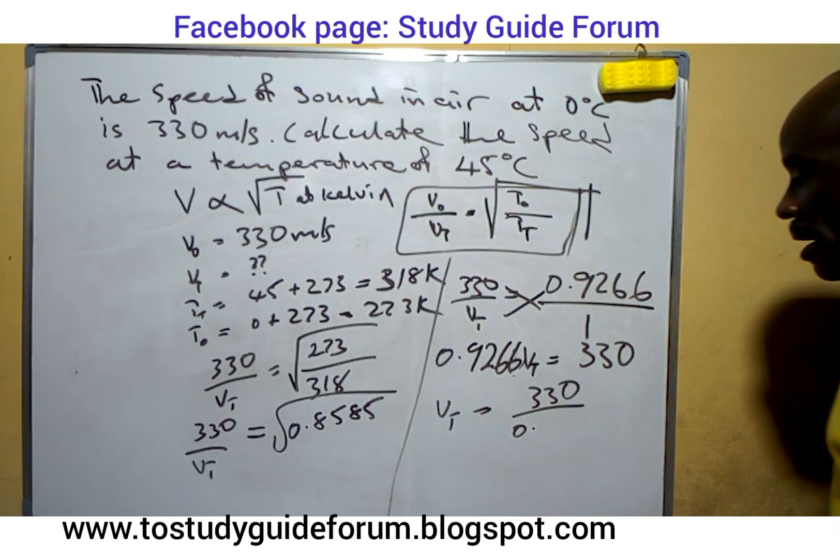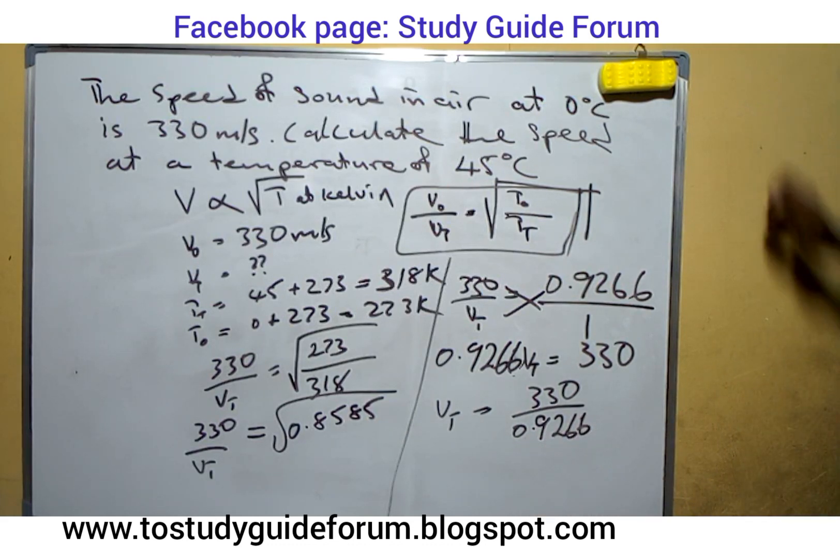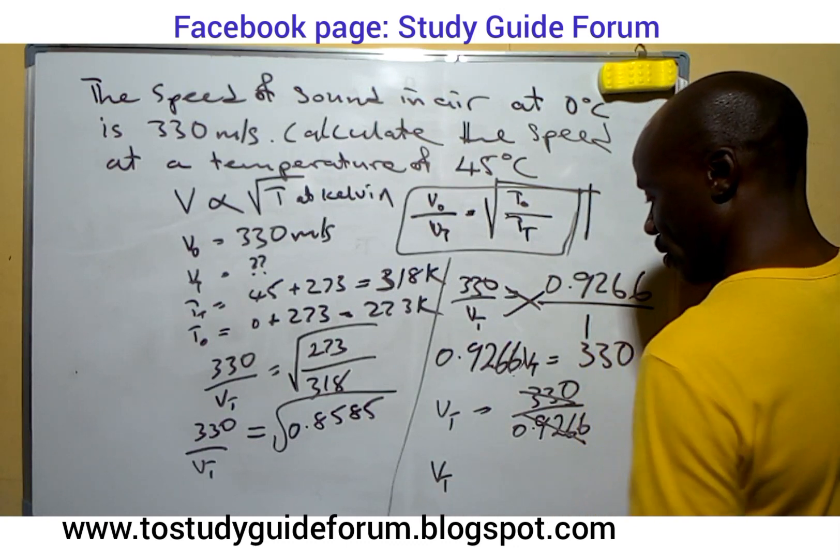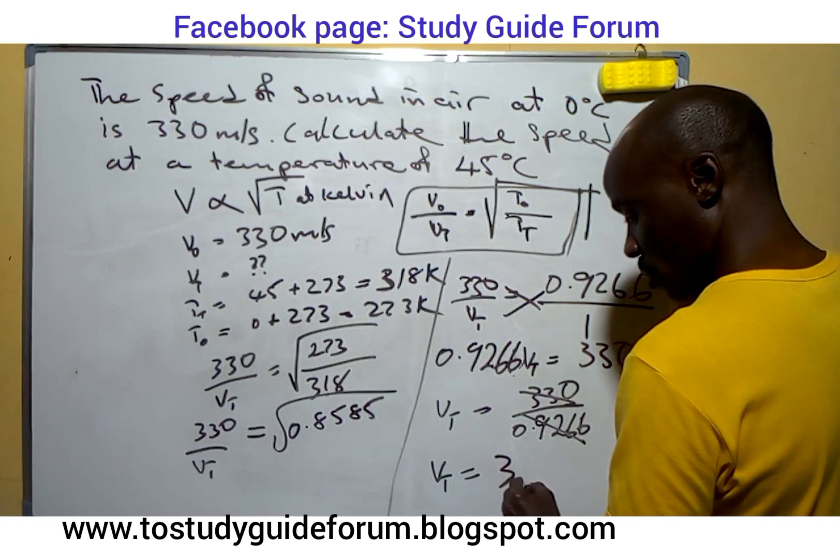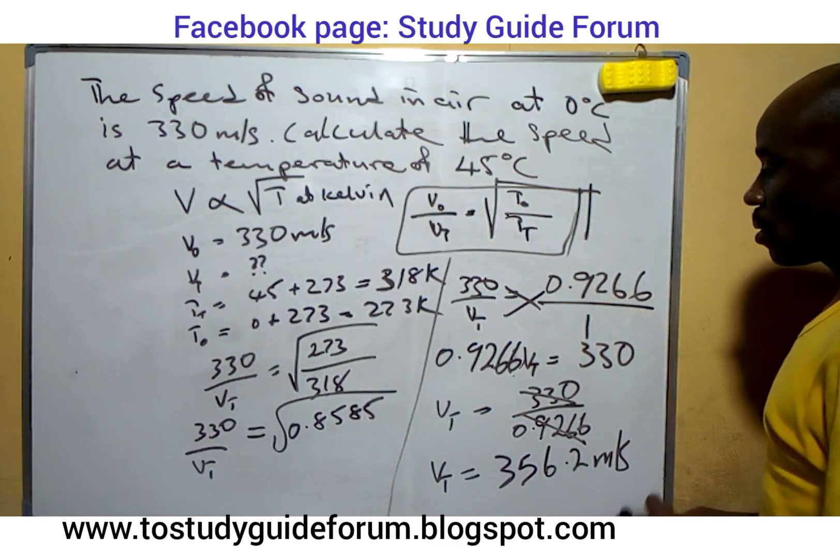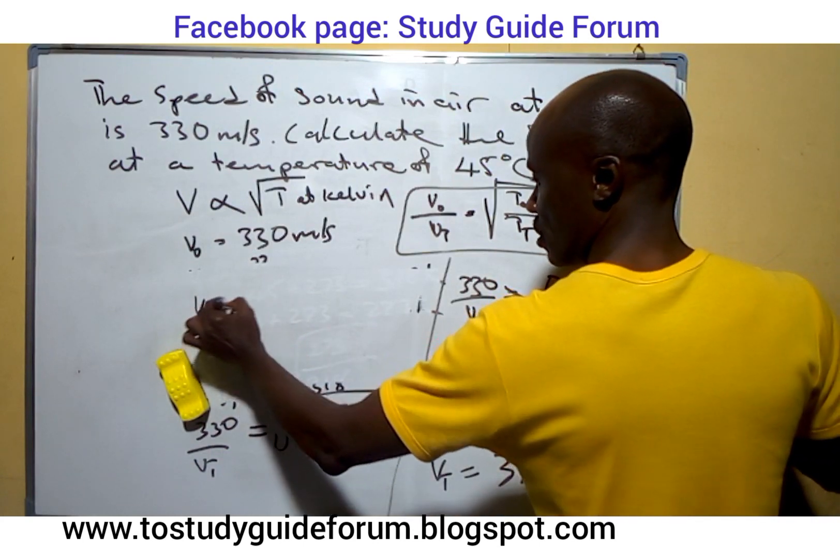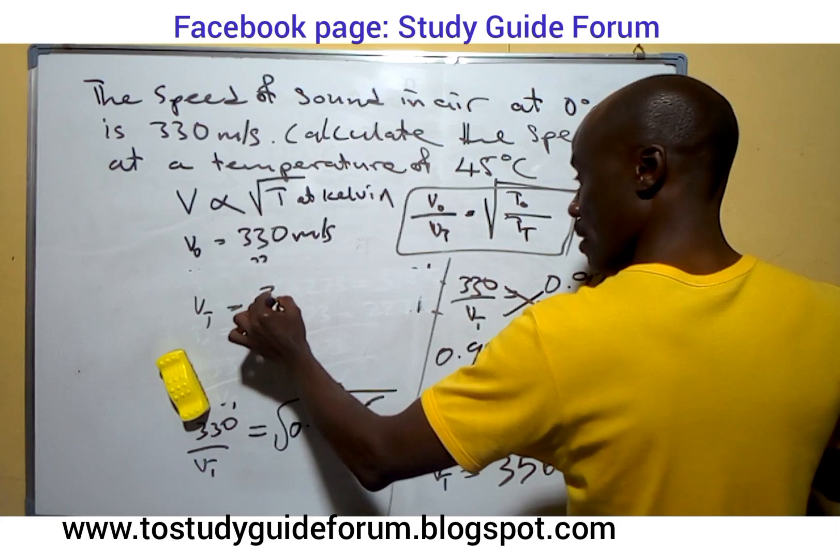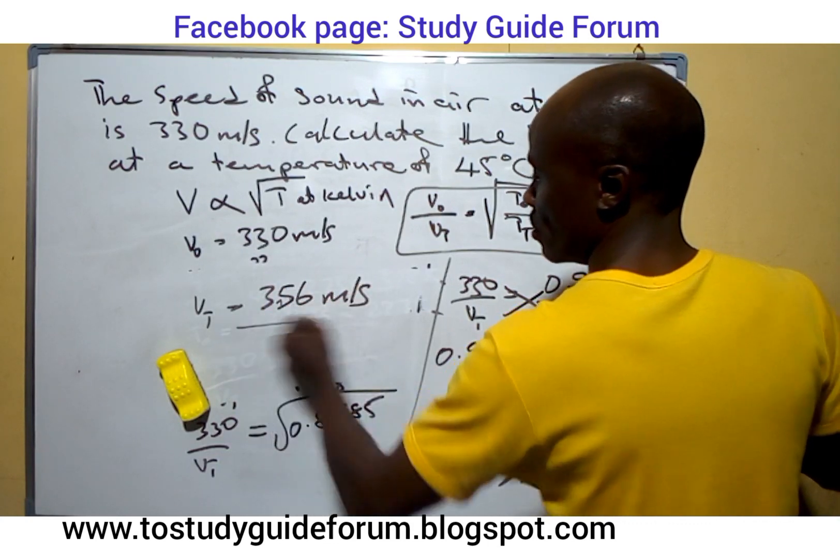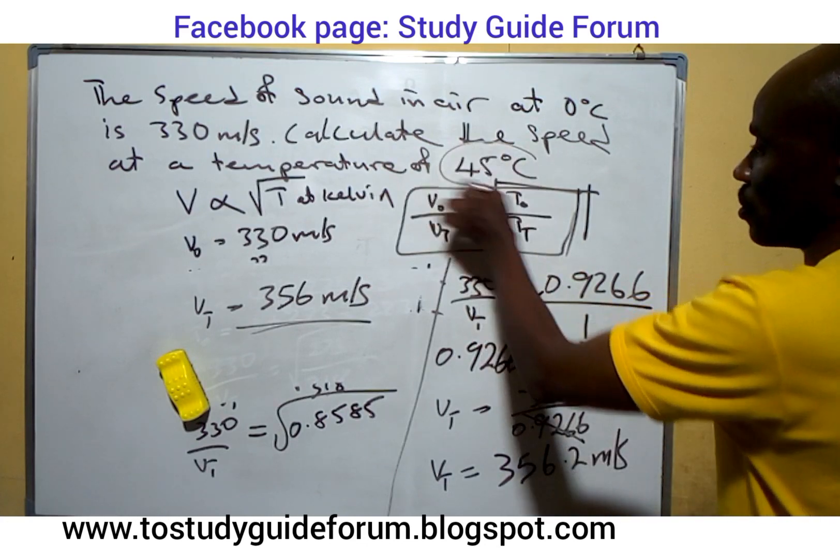If we divide 330 by 0.9266, we have our Vt to be equal to 356.2 meters per second. We can also approximate it to 356 meters per second. That's the velocity in question at this temperature.